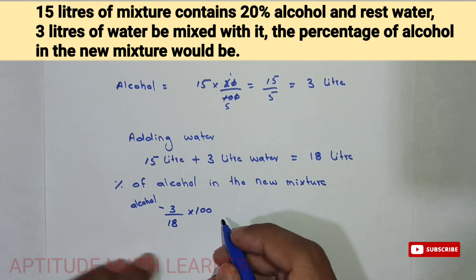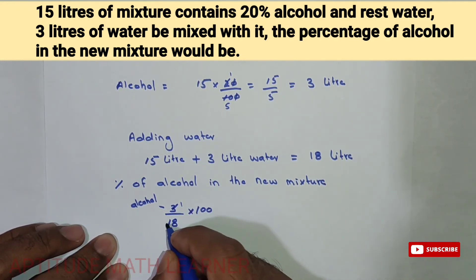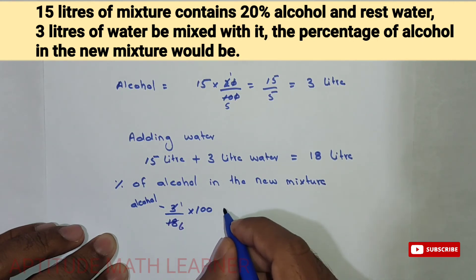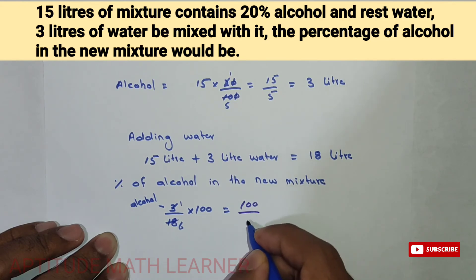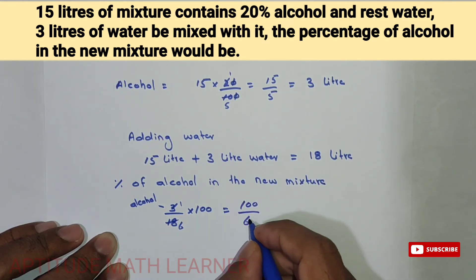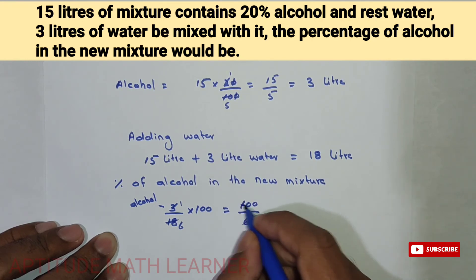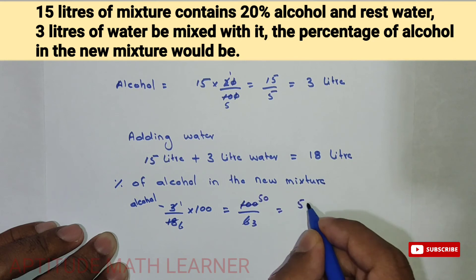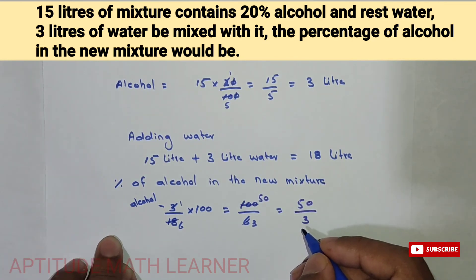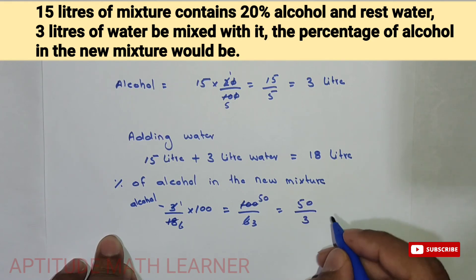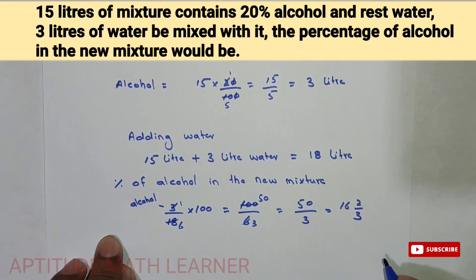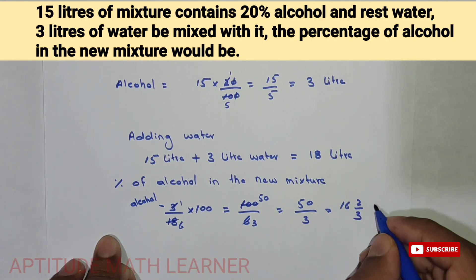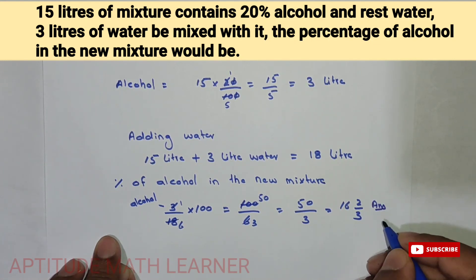So this becomes 3 upon 18 multiplied by 100, which gives us 100 upon 6. Dividing further, we get 50 upon 3, which equals 16 and 2 upon 3. So the final answer is 16⅔ percent. Hope you have understood — thank you very much, this is our answer.